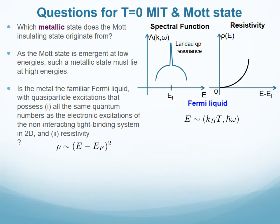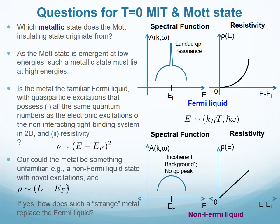We can also ask which metallic state lying at high energies does the insulating state originate from. Is the metal the well-understood Fermi liquid with a quasiparticle peak in its spectral function and a low-temperature resistivity that goes as the square of the temperature? Or is the metal a non-Fermi liquid with novel excitations and a low-temperature resistivity that varies linearly with the temperature?